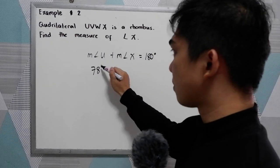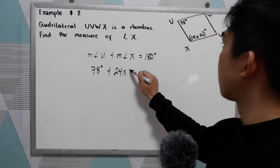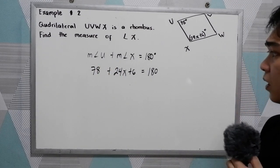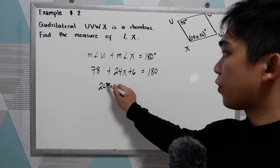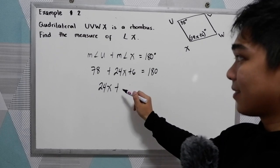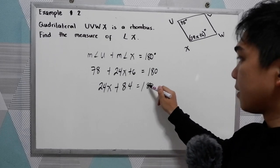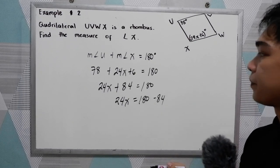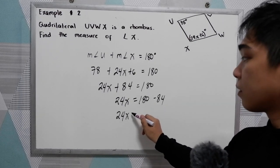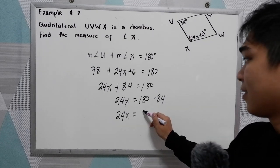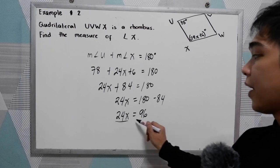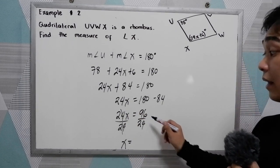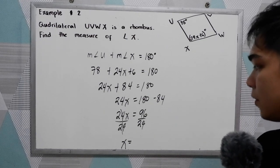So, substituting: 78 plus (24X + 6) equals 180 degrees. Combining like terms: 24X + 84 = 180. So 24X = 180 minus 84, which gives 24X = 96. Therefore X = 96 divided by 24, which is 4.